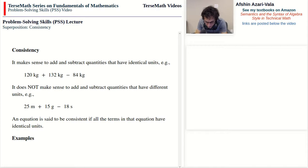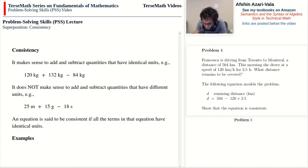To explain, let me give you a couple of examples. Here's problem number one. Francesca is driving from Toronto to Montreal, a distance of 504 kilometers. This morning she drove at a speed of 120 kilometers per hour for 2.5 hours. What distance remains to be covered? The following equation models the problem: D represents the value of the remaining distance in kilometers. D is equal to 504, which is the distance from Toronto to Montreal, minus 120 times 2.5, which represents the distance that Francesca has already covered.